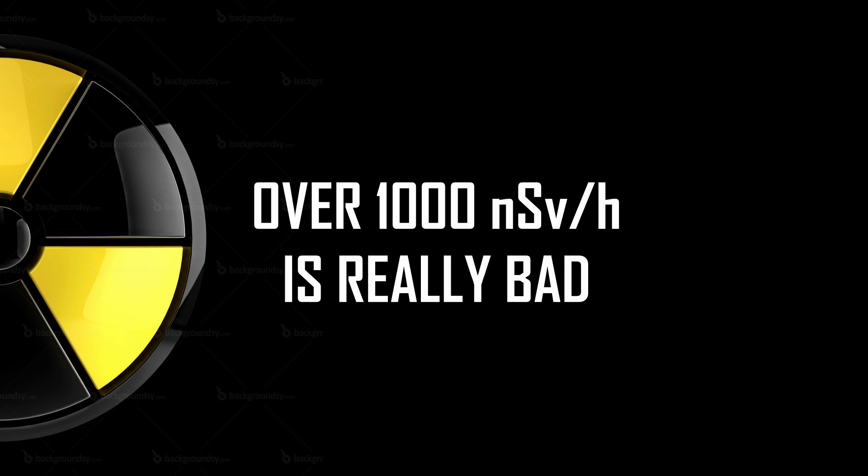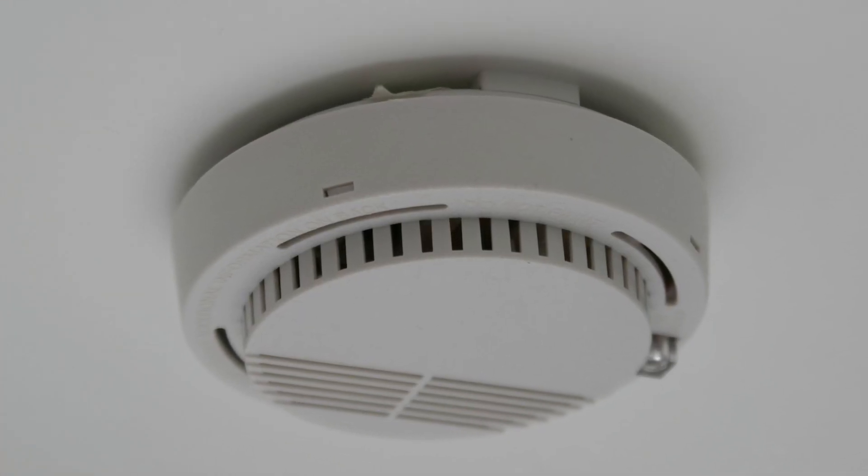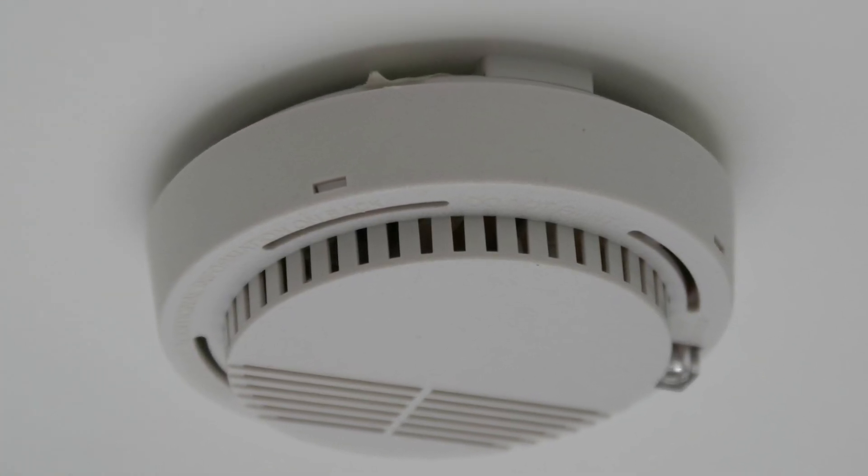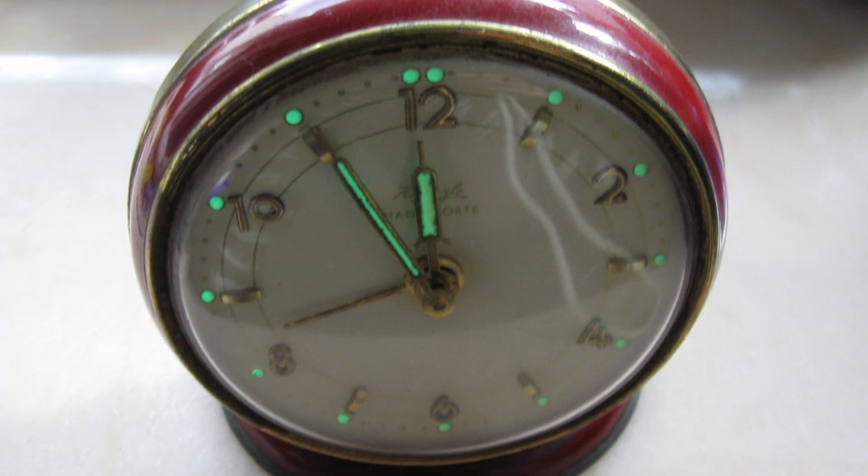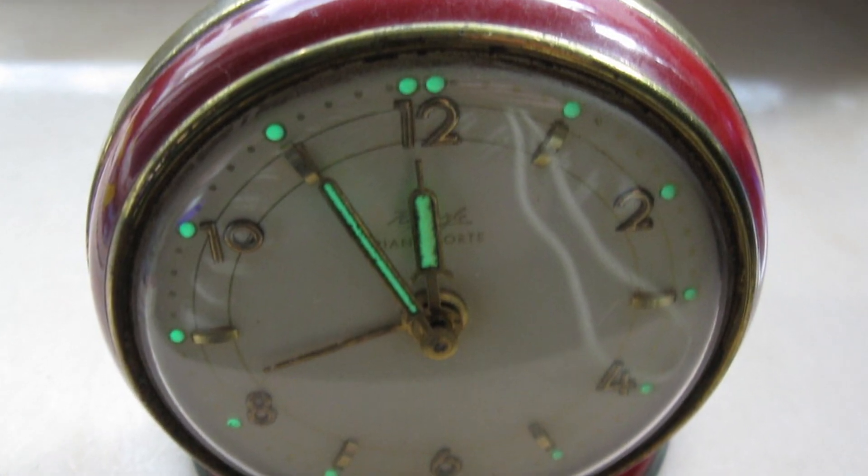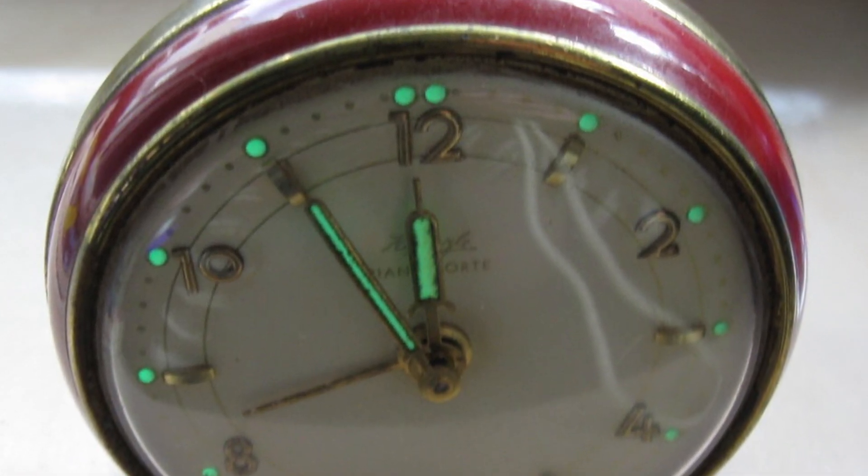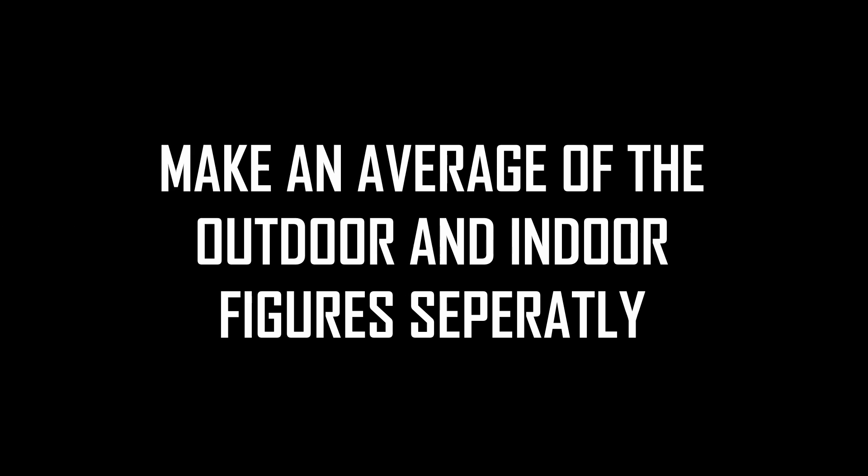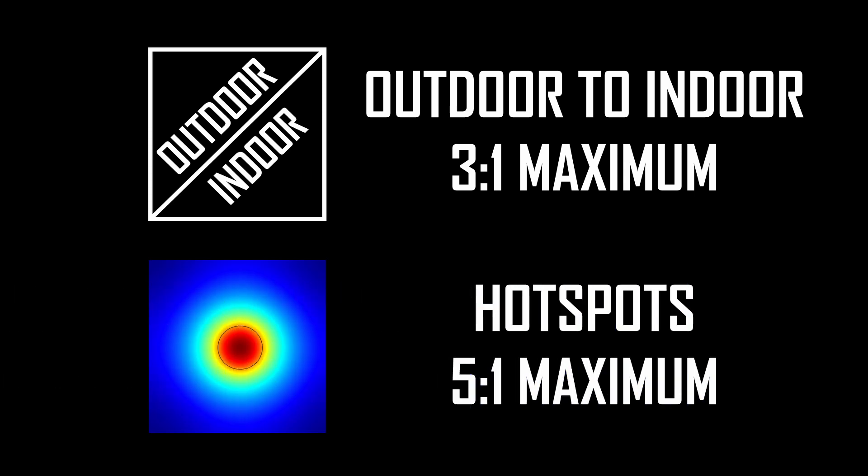Don't take readings next to smoke detectors or other known short-range sources of radiation, it will distort the results of your survey. Once you have collected the data, you should average all of the outdoor readings and also the indoor figures. The ratio of these two averages should not exceed 3 to 1, and no hot spots should exceed a ratio of 5 to 1.